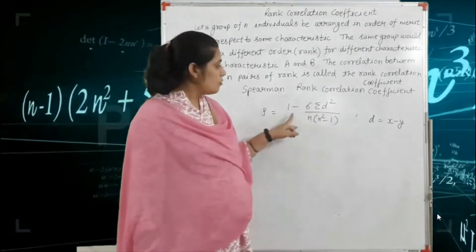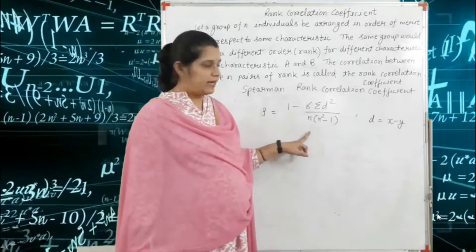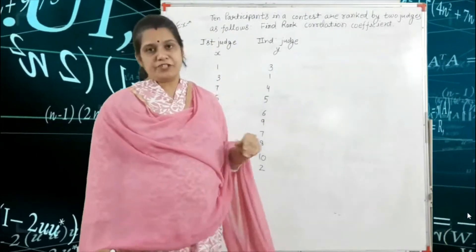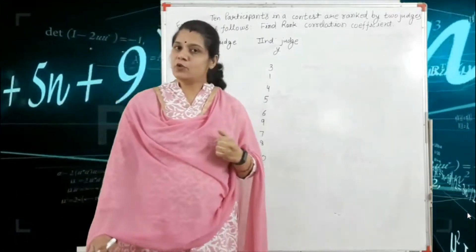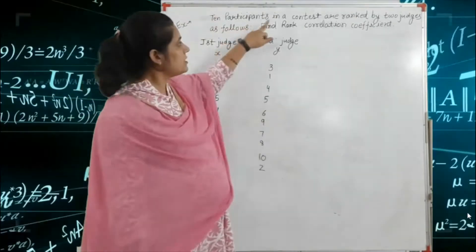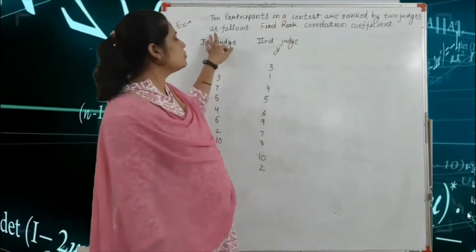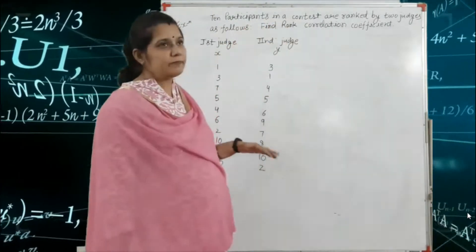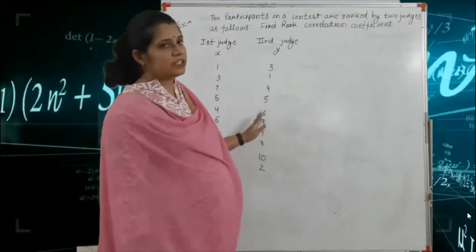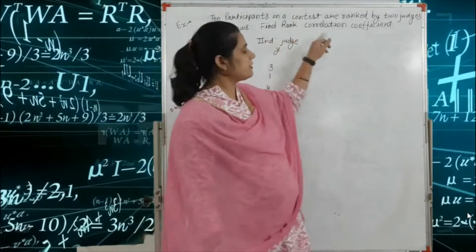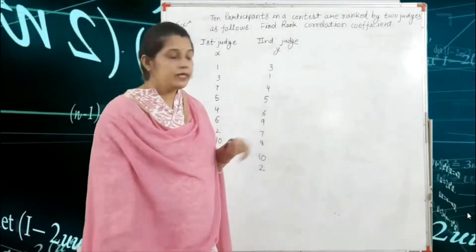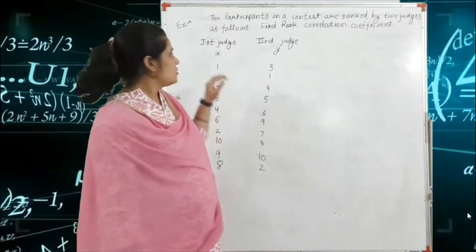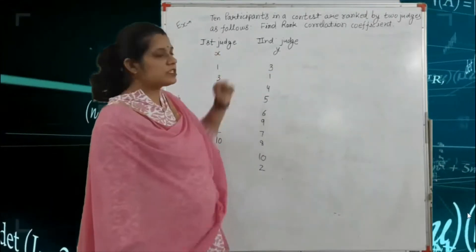This is an example of the rank correlation coefficient — we want to find rho. The example is: 10 participants in a contest are ranked by 2 judges as follows. Here we are given 10 ranks for 10 participants. The rank given by the first judge will be considered x and the rank given by the second judge will be considered y.